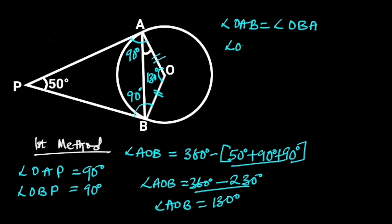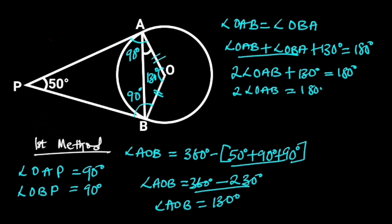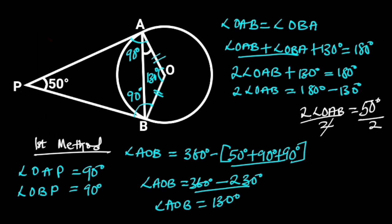Going further, we can say that angle OAB plus angle OBA plus 130 degrees is equal to 180 degrees. Reason: the sum of angles in a triangle is equal to 180 degrees. Since angle OAB is equal to angle OBA, we can say that 2 times angle OAB plus 130 degrees is equal to 180 degrees. So 2 times angle OAB equals 180 degrees minus 130 degrees, which is 50 degrees. Dividing both sides by 2, angle OAB equals 25 degrees.